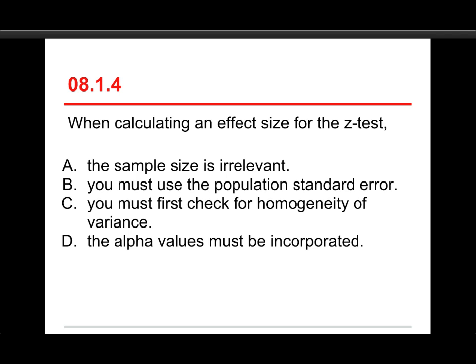Number four. When calculating an effect size for the z-test, the sample size is irrelevant, you must use the population standard error, you must first check for homogeneity of variance, or the alpha values must be incorporated. The answer to this one is A, the sample size is irrelevant.